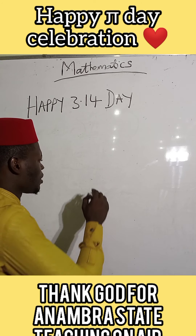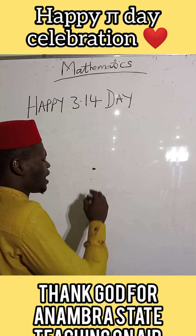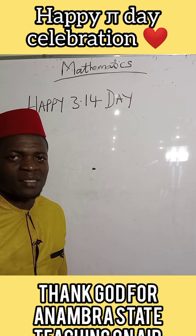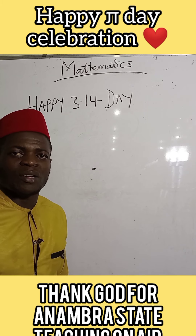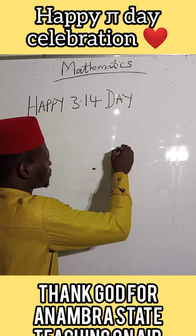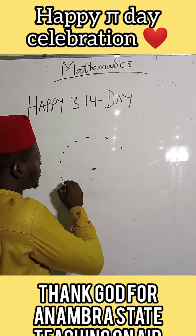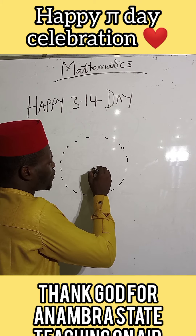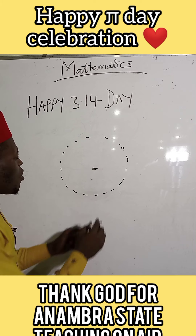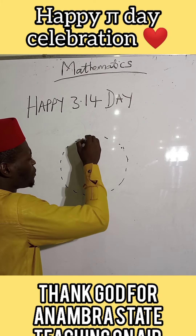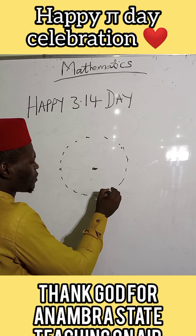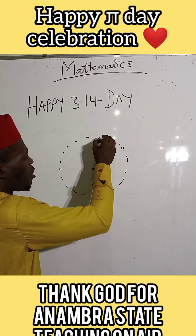We cannot talk about Pi without talking about circles. The circle is the set of all points that are equidistant around another, or a single point. You can see the distance from this point to this place is equal to the distance from this point to this place. That's the reason we call it the equidistant set of points.